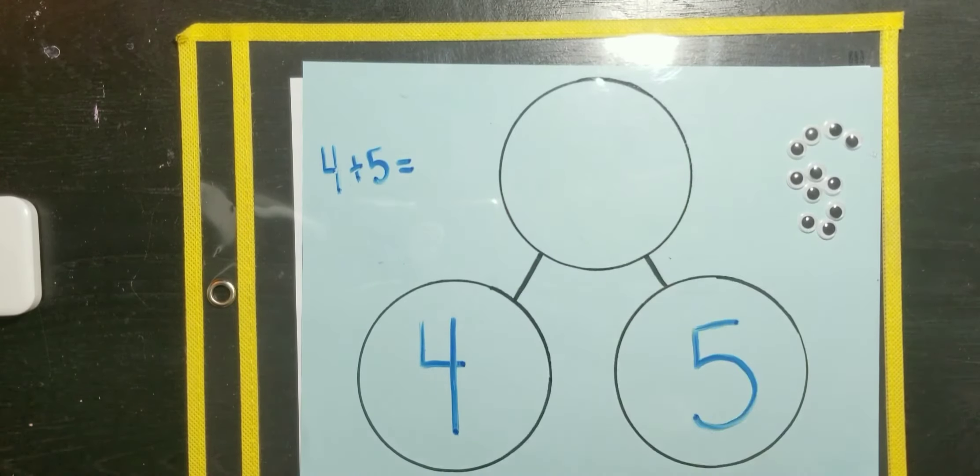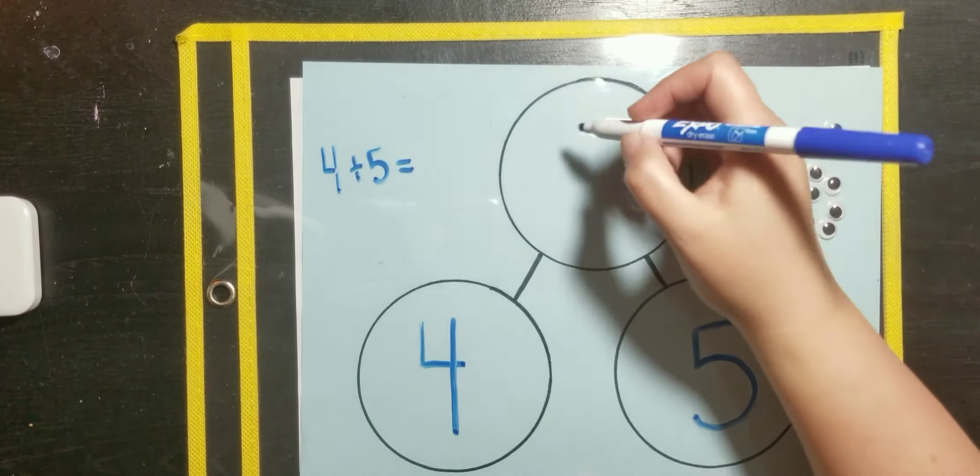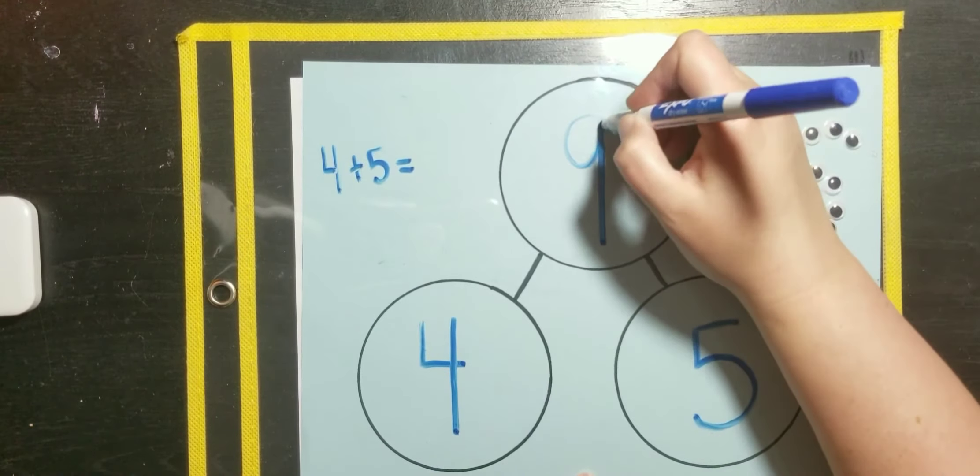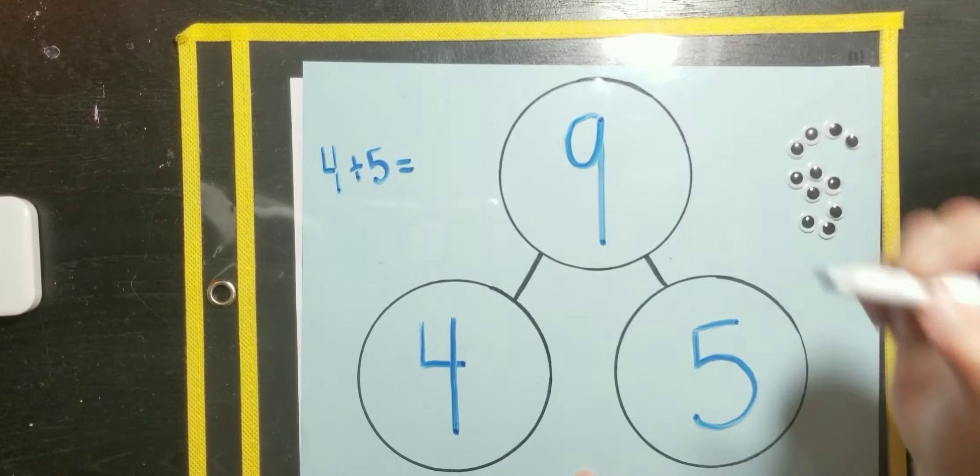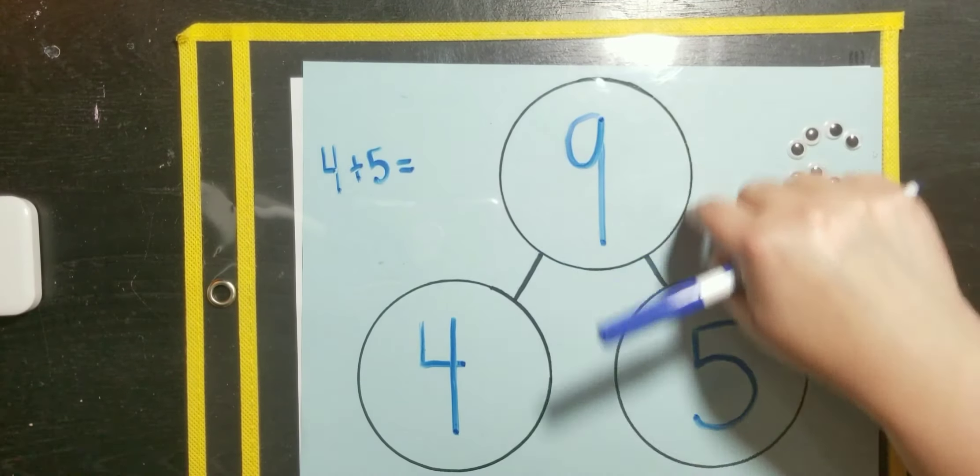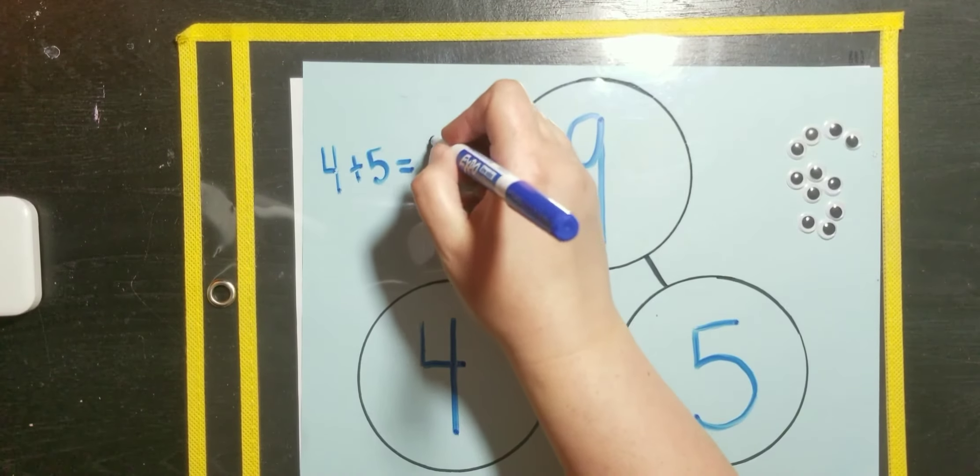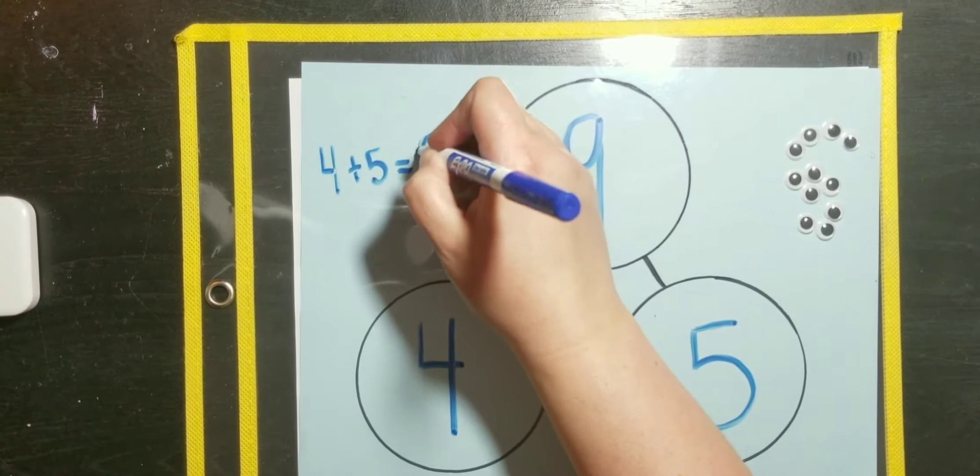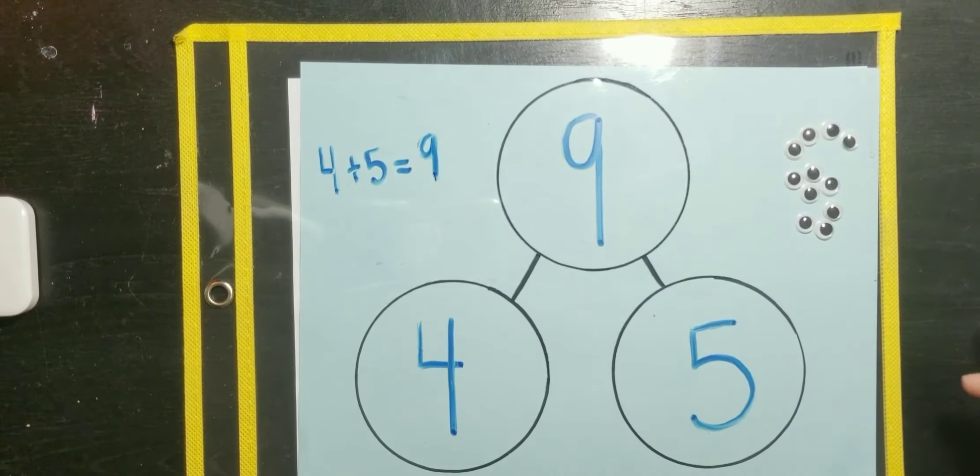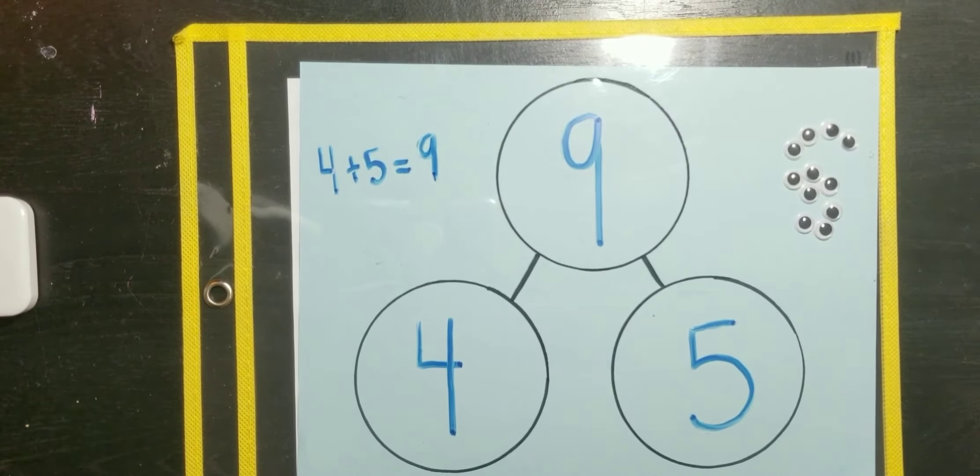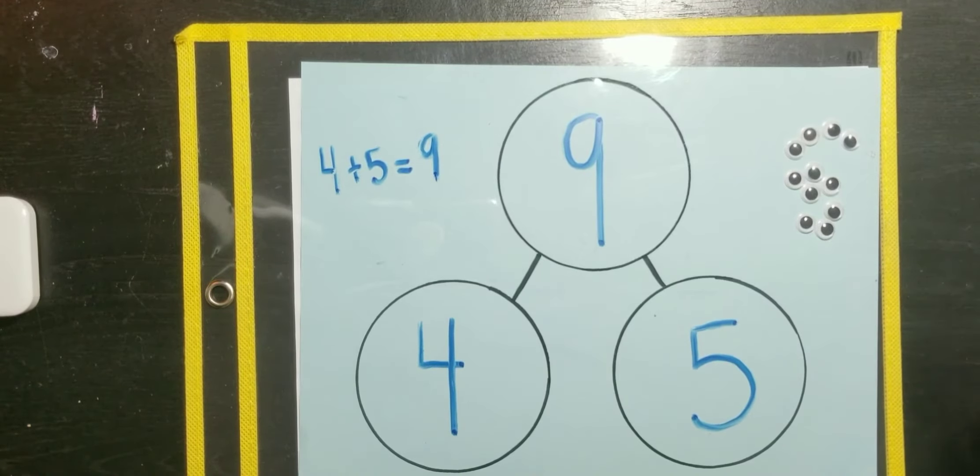So, I've counted nine total sunflowers. So, I'm going to put the number nine up here in the whole section of our number bond. Four plus five equals nine. And I'm going to also put that here in the number sentence. Okay, did you get it? Is that the right answer? I hope so. Alright, let's do another one. Let me erase.